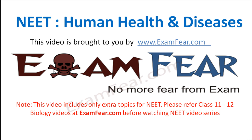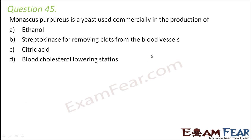Hello friends, this video on NEET human health and diseases is brought to you by examfure.com. Question number 45: Monascus purpureus is a yeast used commercially in the production of — (A) ethanol,